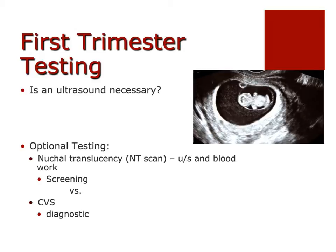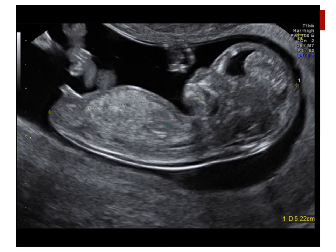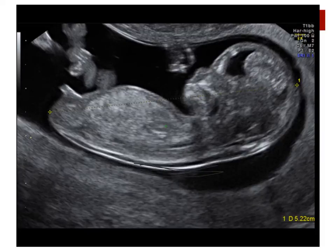Is an ultrasound necessary in the first trimester? It's almost always routinely done, and why it's routinely done is to measure the baby from crown to rump. We literally measure to confirm that the date of her LMP matches with the size of that baby for an estimated due date — so it's confirmation of a due date. The ultrasound gives you an image of the baby, showing the measurement of that crown to rump, and you can see the spine forming on the baby as well.